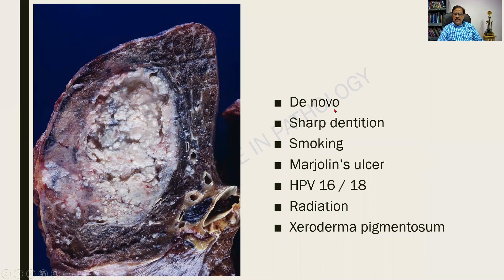What are the causes for a squamous cell carcinoma? It can arise de novo — that is, anew on its own. Or it can be because of sharp dentition; the oral cavity is very notorious for it. Smoking is another cause. Marjolin's ulcer is a chronic non-healing leg ulcer that can result in a squamous cell carcinoma. In the cervix, human papillomavirus types 16 and 18 are supposed to pave the way for SCC. Other causes include radiation and xeroderma pigmentosum.